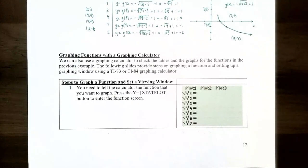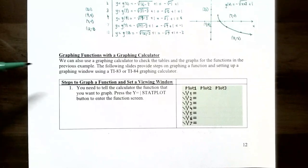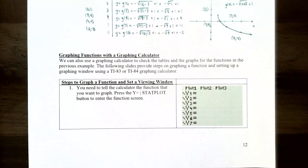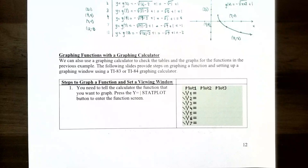Although we can graph functions by plotting points, there's a much faster way using technology. We can use a graphing calculator to check tables and graphs of functions. The following slides give steps on how to graph a function and set up a graphing window using a TI-83 or TI-84 graphing calculator.